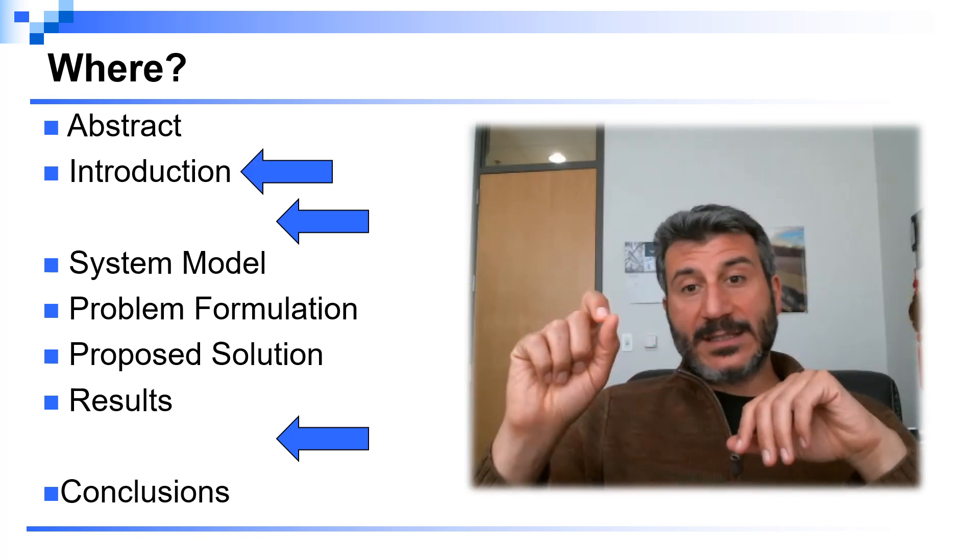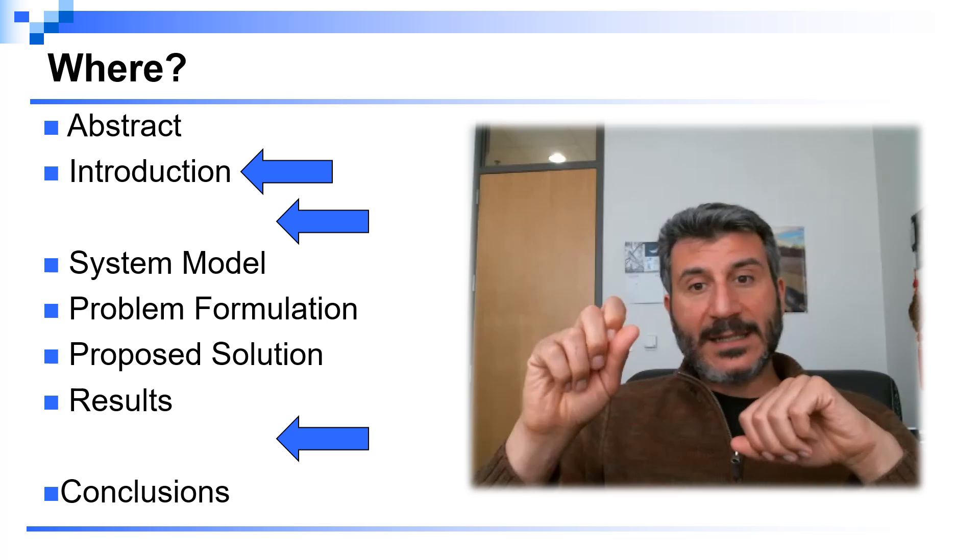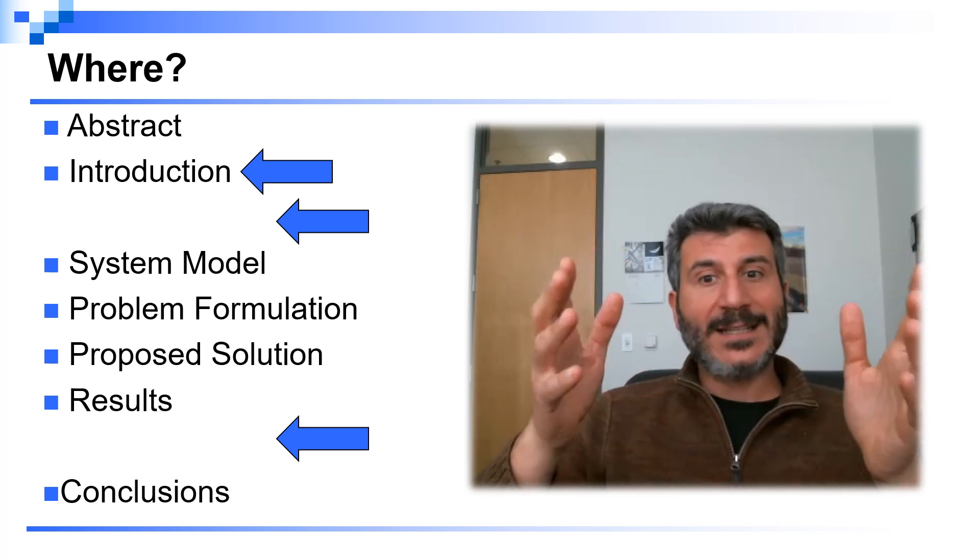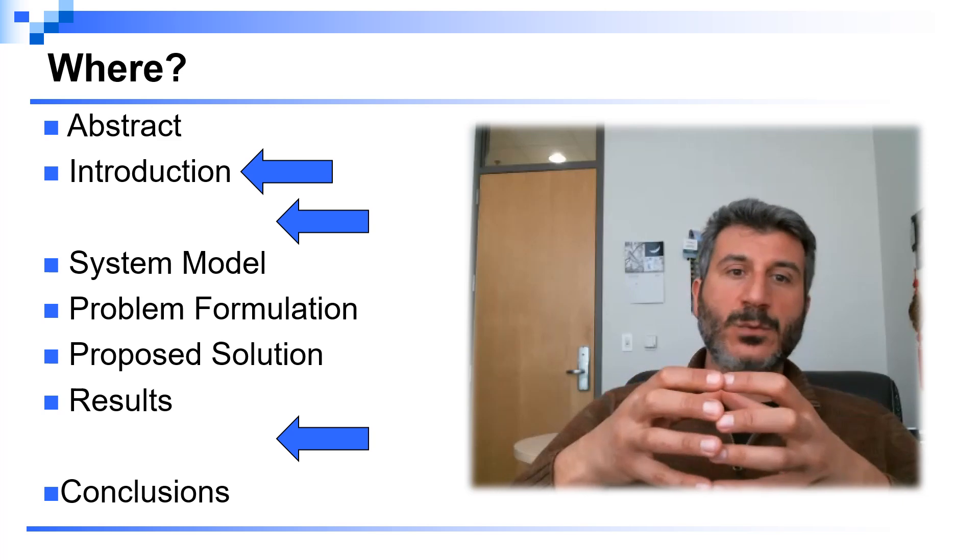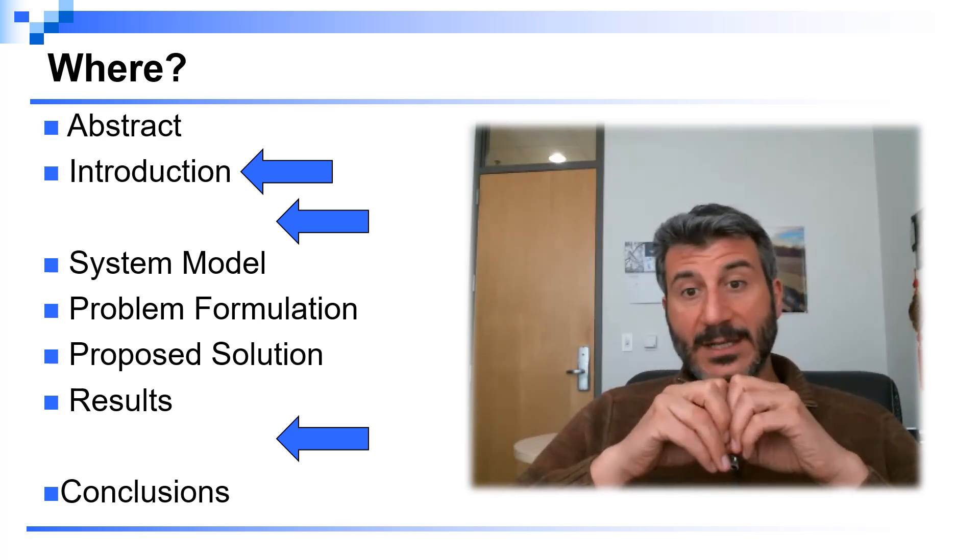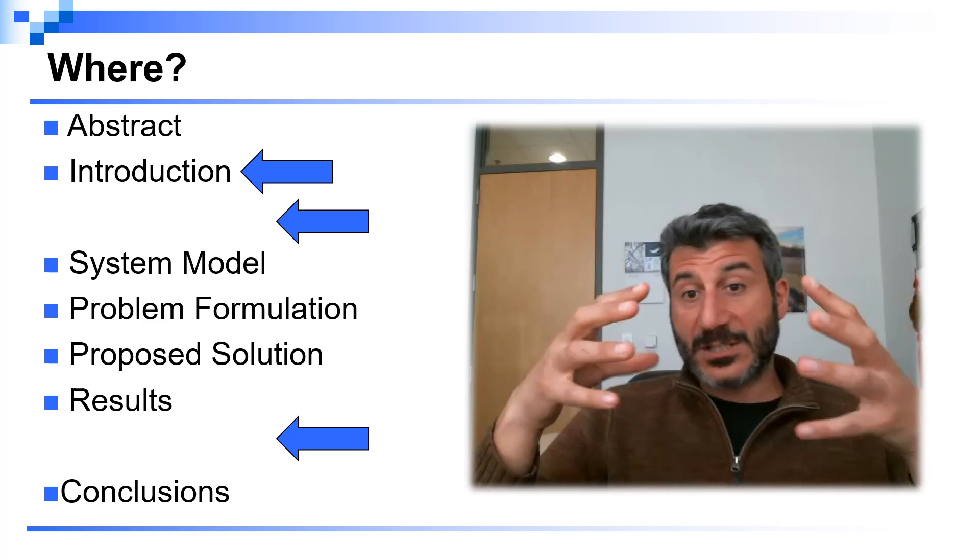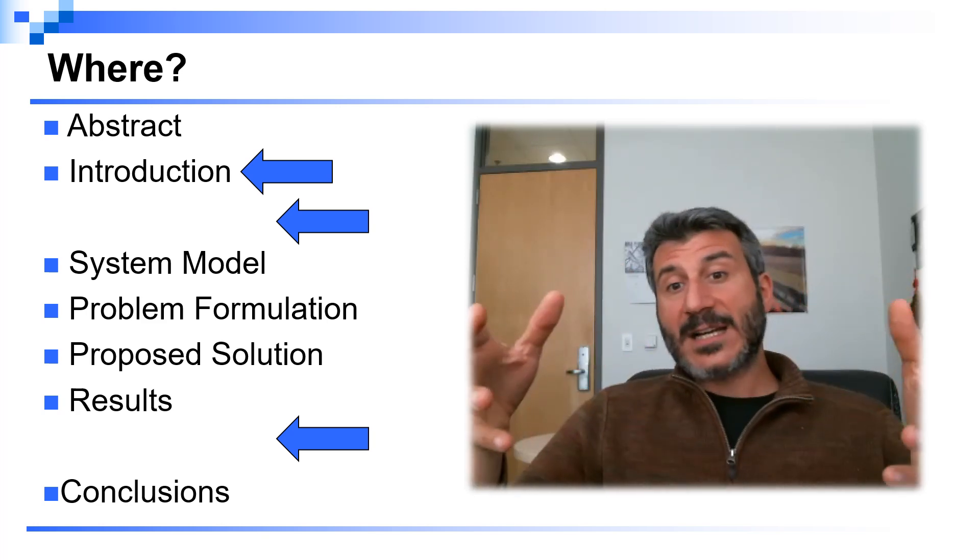Finally, I want to mention that there is another option. And this is typically for shorter papers about, for example, six pages or less. In that case, you may merge the related work section inside the introduction since you don't have a lot of space and you don't want to spend too much time and space in your paper describing the literature.